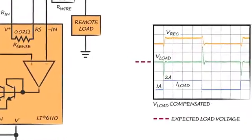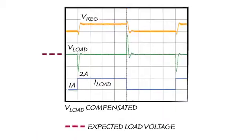The LT6110 requires that the resistance of the wire be known. However, that resistance does not have to be very accurate to achieve good compensation. For example, if the resistance of the wire were to double, causing a 50% error in the compensation voltage, the regulation at the load would still improve by a factor of two.